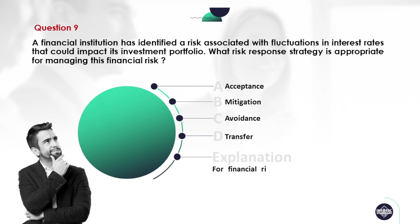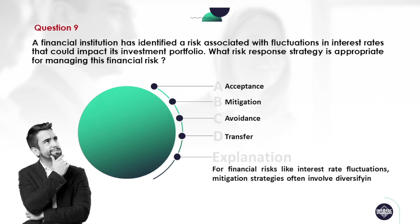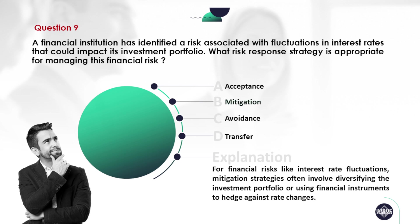For financial risks like interest rate fluctuations, mitigation strategies often involve diversifying the investment portfolio or using financial instruments to hedge against rate changes. Hence, the correct answer is Option B: mitigation.